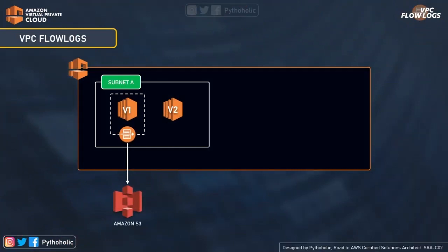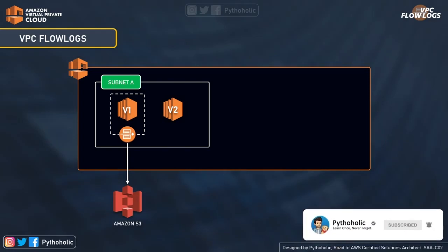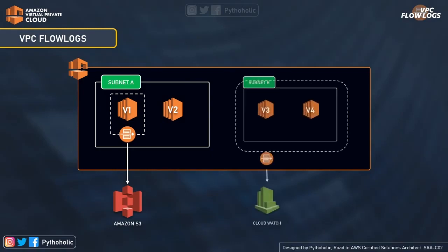You can create VPC flow logs for three entities: the VPC itself, a subnet, or a network interface. If you enable it for a subnet, all the instances and interfaces within that subnet will also be monitored.